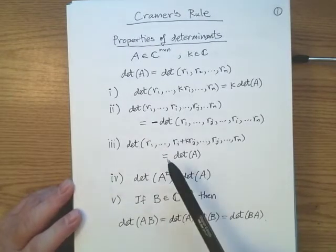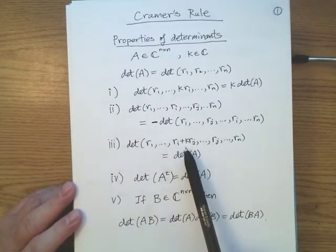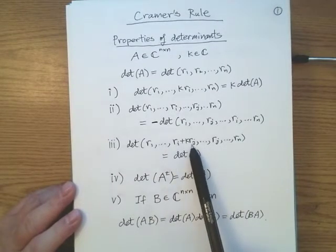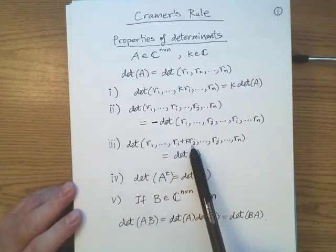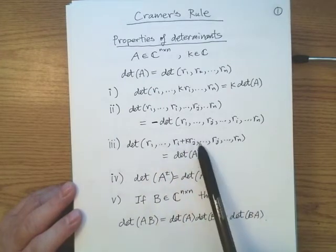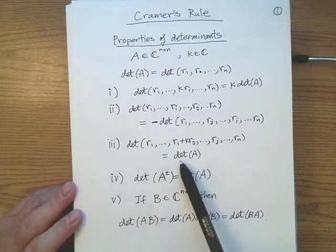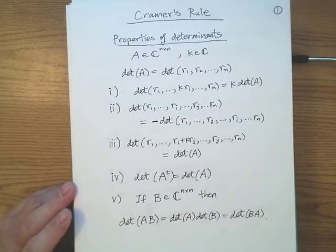One last fundamental elementary row operation: if I take a multiple of one row and add it to another row, how does that change the determinant? If I take the jth row and add the scalar multiple K times it to the ith row, leaving everything else unchanged, I get exactly the same determinant. Determinants are unchanged under that particular elementary row operation.